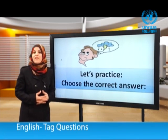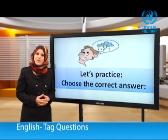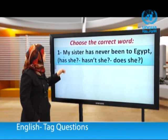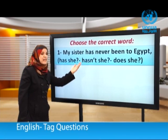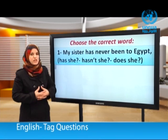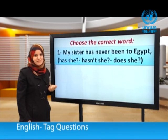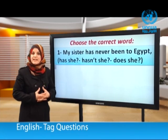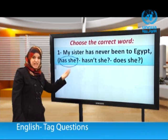Now let's move to the next activity: choose the correct answer. Number one: My sister has never been to Egypt — has she? Hasn't she? Or does she? Notice we have 'never', so the statement is negative. The correct tag question is: has she? So: My sister has never been to Egypt, has she?